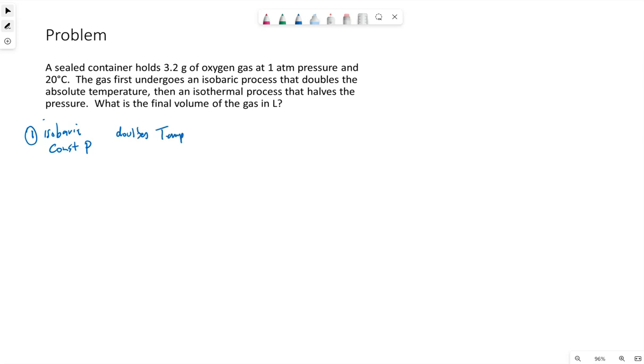Now, when it says it doubles the absolute temperature, that means we're doubling the temperature in Kelvin. The second step is isothermal, meaning constant temperature. It halves, it cuts in half the pressure.